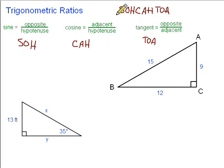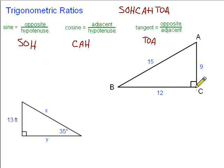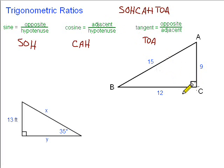Now let's take a look at how they can be applied. Let's say we want to find the sine of angle A in this triangle right here. When we're talking about opposite, adjacent, and hypotenuse, these only apply to right triangles. So first we should look for the little box in the corner that tells us it's a right triangle.